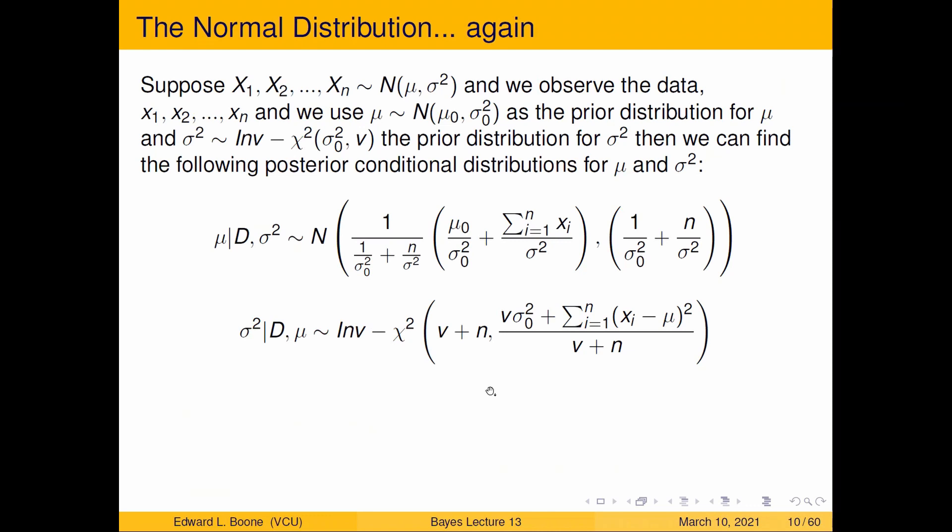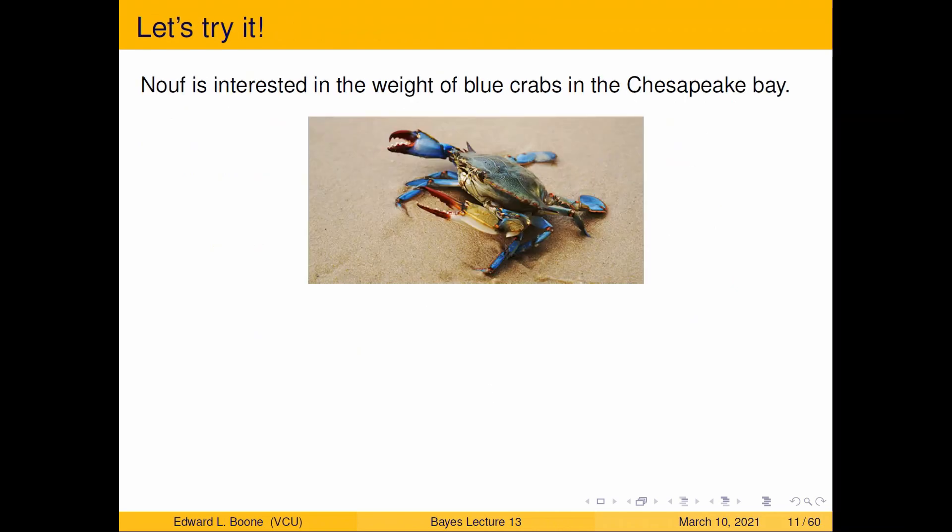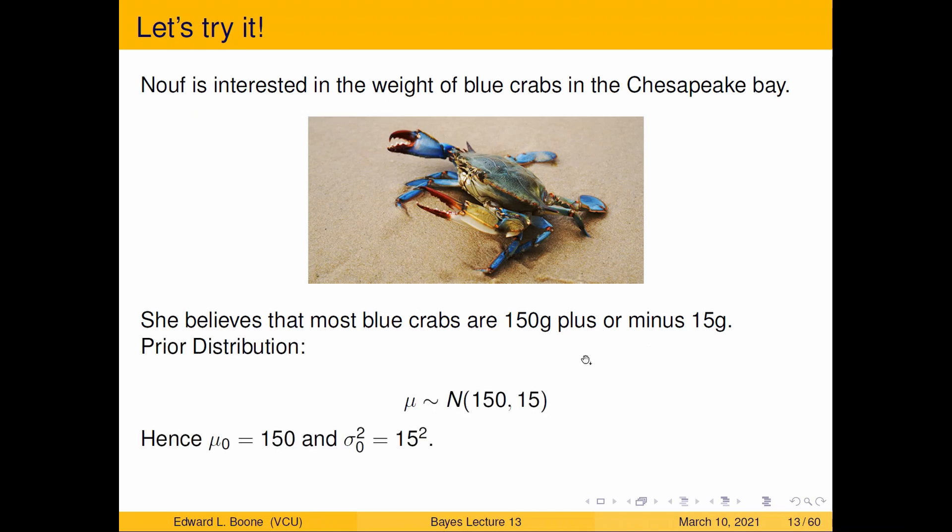Alright, so we're going to look at the normal distribution again. Nouf is interested in the weight of blue crabs in the Chesapeake Bay. She believes that most blue crabs are 150 grams plus or minus 15 grams. So that would give us a prior distribution for μ of N(150, 15²). Here is our prior distribution. Our likelihood is going to come from a normal distribution with mean μ and variance σ².